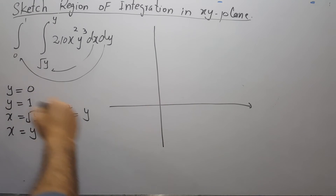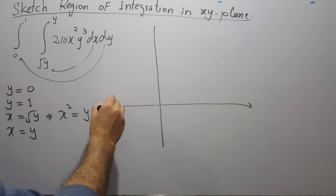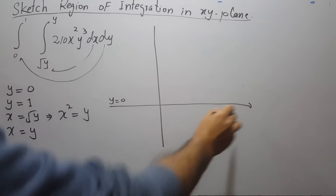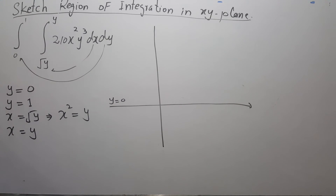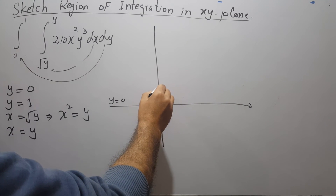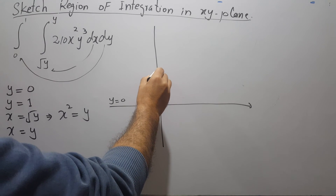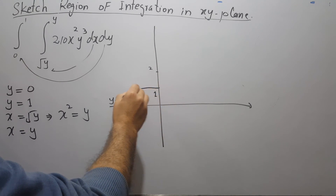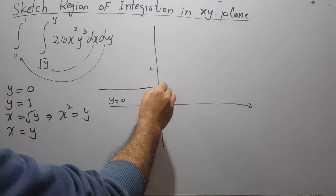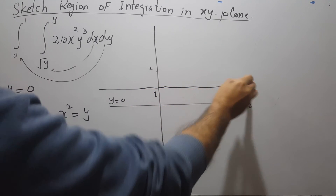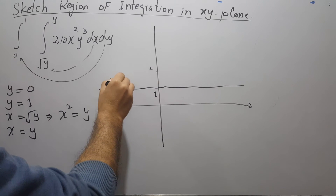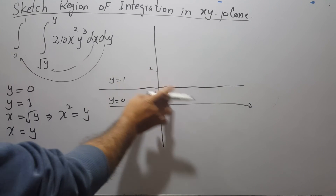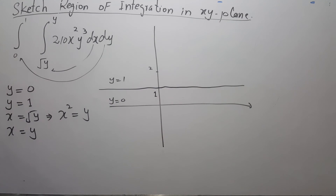On the XY plane, y = 0 is the horizontal axis — this whole line. y = 1: if this point is 1 and this is 2, then this horizontal line is y = 1. The lower limit is y = 0 and the upper limit is y = 1, so everything must be between these two lines.